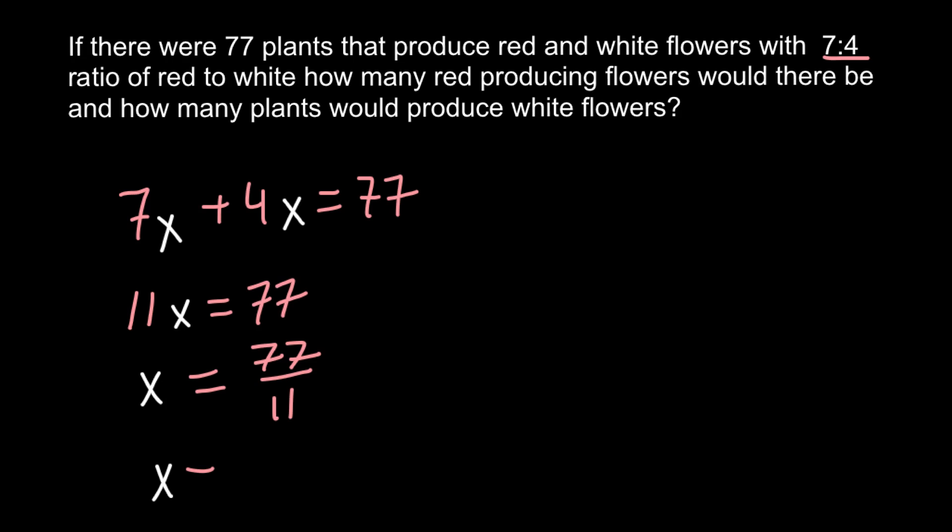And now if we know the ratio 7 to 4 plants that produce red and white flowers, we can easily find absolute numbers, which would be for red, 7 multiplied by 7 would give us 49 red flowers.